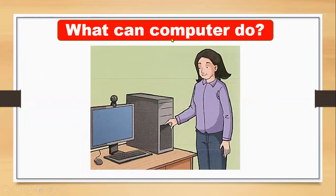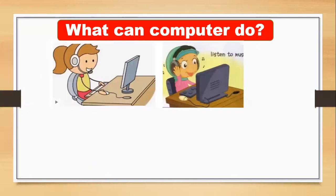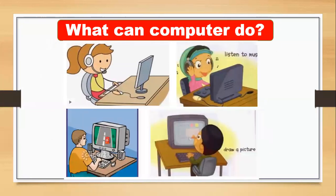Now, what can computers do? Look at these four pictures. We discussed that we can talk, listen to music, draw pictures, and play games — these are things a computer can do for us.